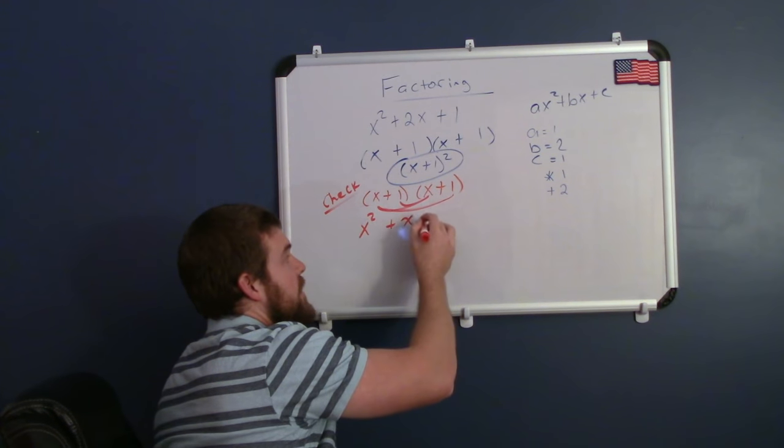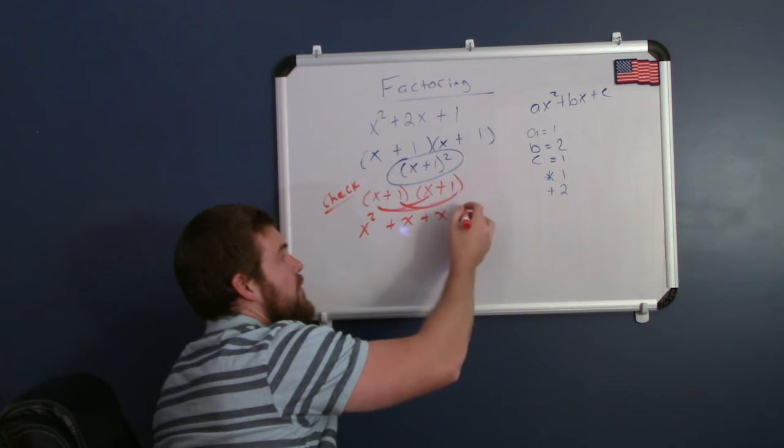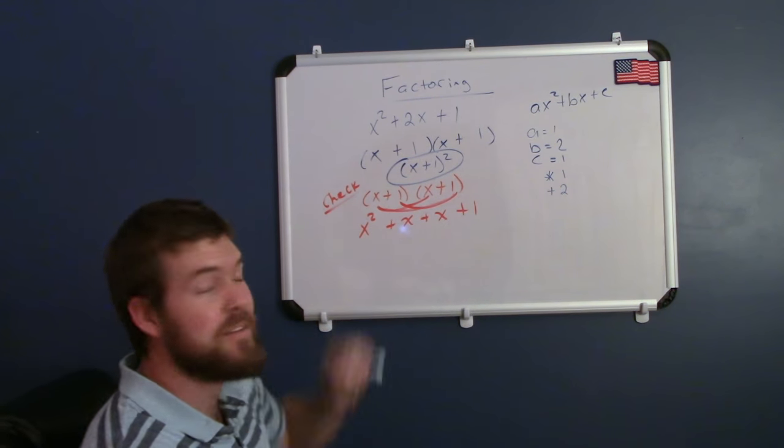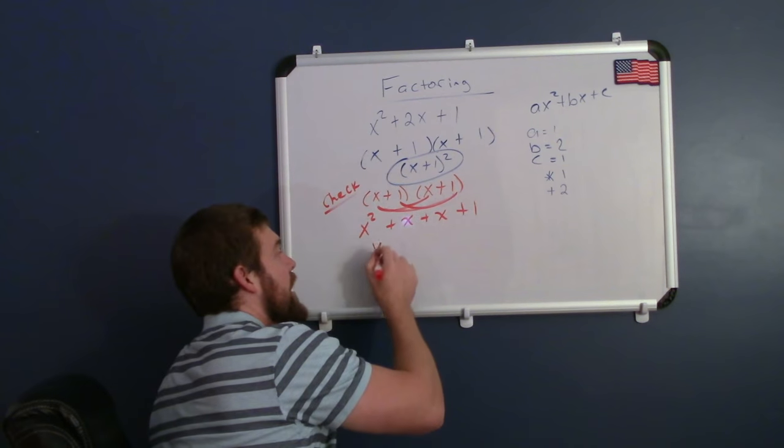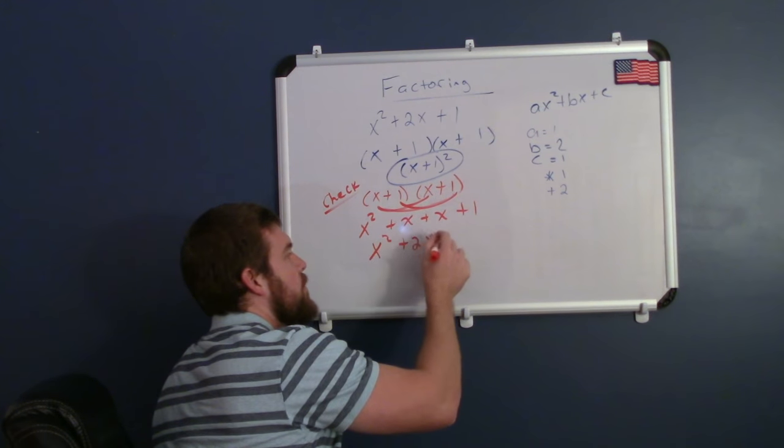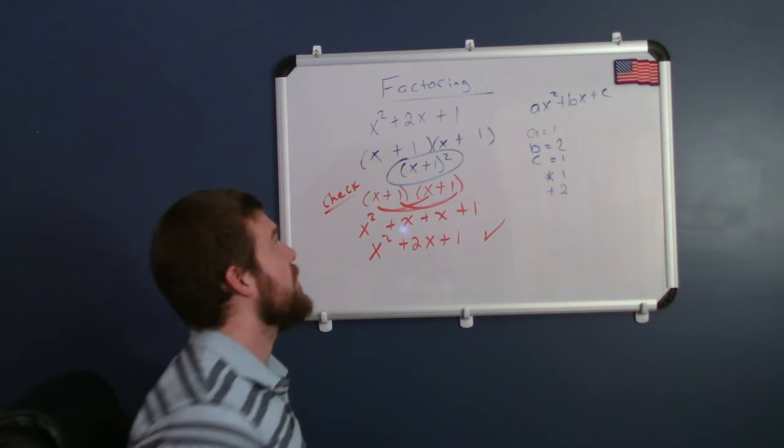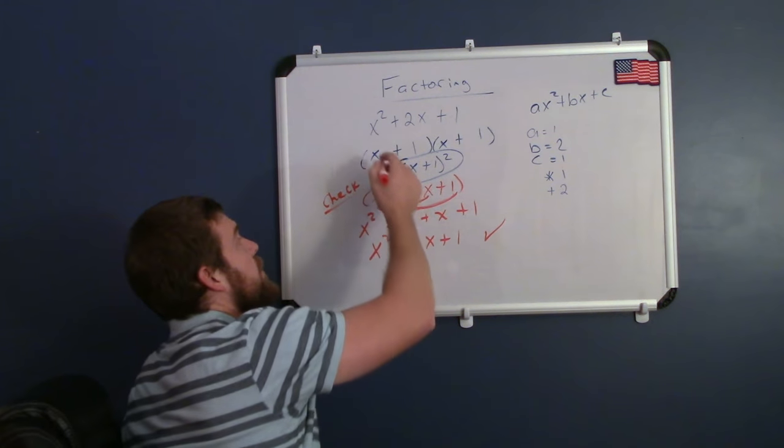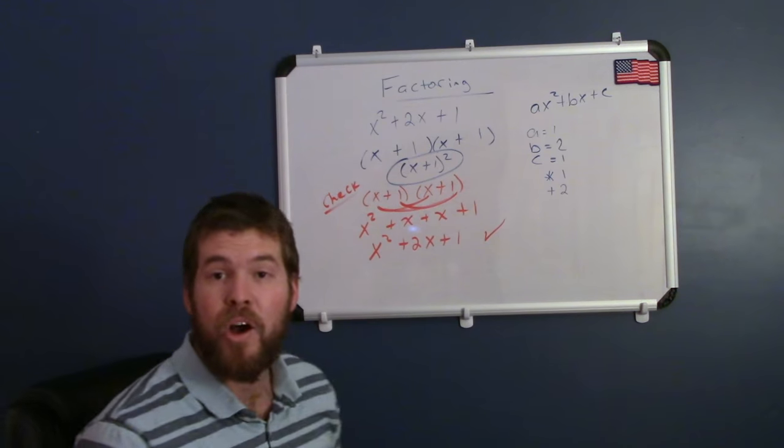1 times x is x again, and 1 times 1 is 1. So now I have x squared plus x plus x plus 1. x plus x is 2x, so we have x squared plus 2x plus 1. Our check is complete because we matched up to the top there. So our answer here is x plus 1 all squared.